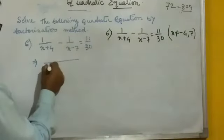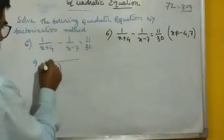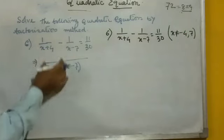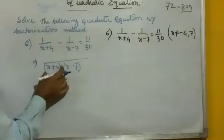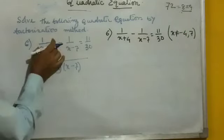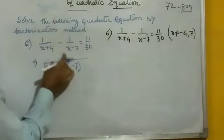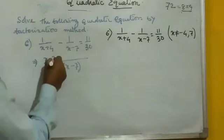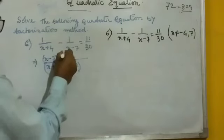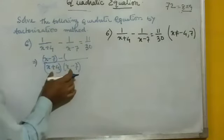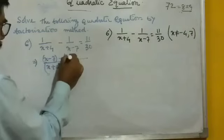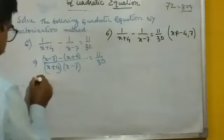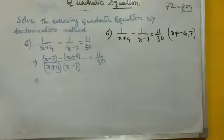Take the LCM of (x plus 4) and (x minus 7). Dividing the first term by x plus 4, x plus 4 cancels, leaving x minus 7. Dividing the second term by x minus 7, x minus 7 cancels, leaving x plus 4. So the left side equals (x minus 7) minus (x plus 4), all over (x plus 4)(x minus 7), equal to 11 by 30.